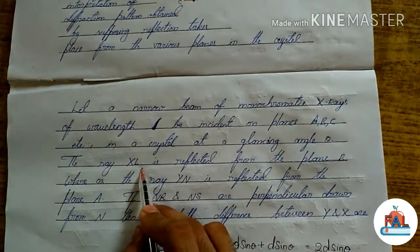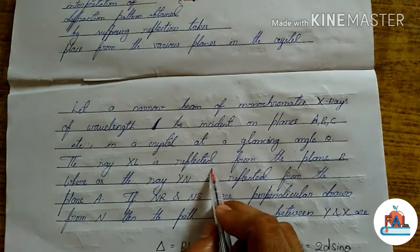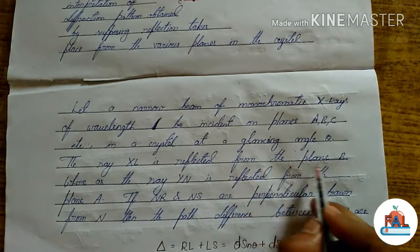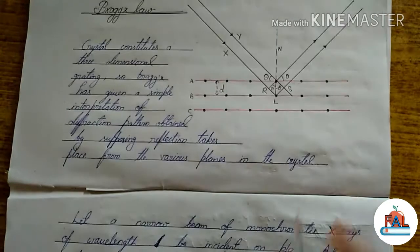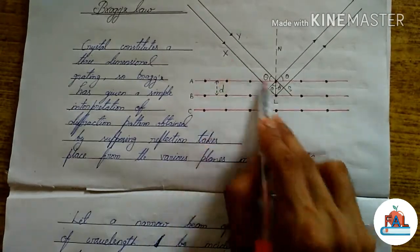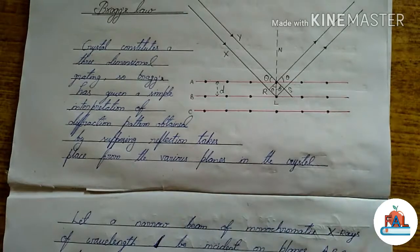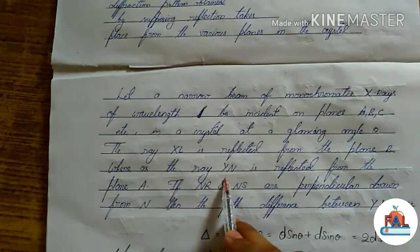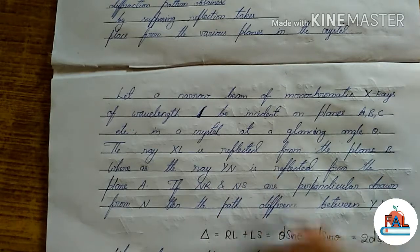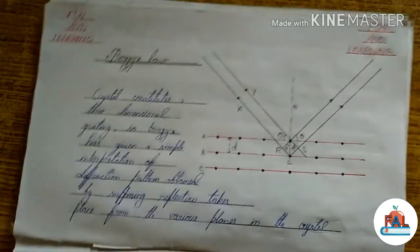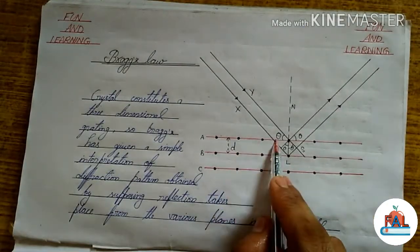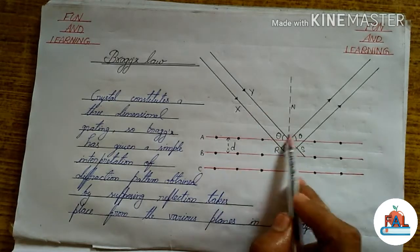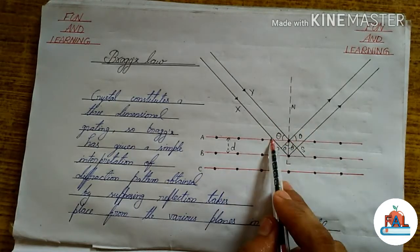The ray X is reflected from plane B. Where is plane B? This is plane B. Whereas the ray Y is reflected from plane A. This is plane A.